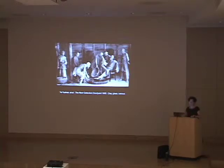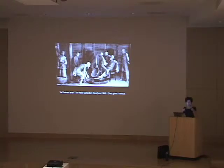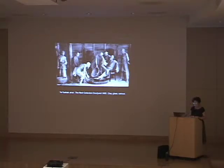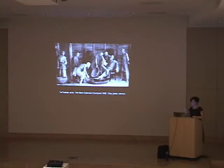Ai Weiwei's father, Ai Qing, was a very well-known poet, a leftist, a Communist Party member, but someone who in 1958 was labeled a rightist in one of the anti-rightist campaigns carried out in the early decades of the PRC, the People's Republic of China. His father and then the family were exiled to the province of Xinjiang, in the far northwest of China, and they lived there for about 16 years.